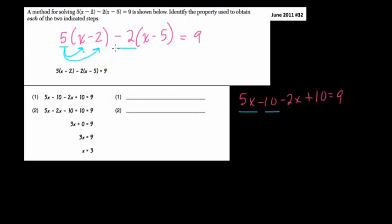And so forth. Negative 2 times x is negative 2x. Negative 2 times negative 5 is positive 10. I would just write distributive property here.